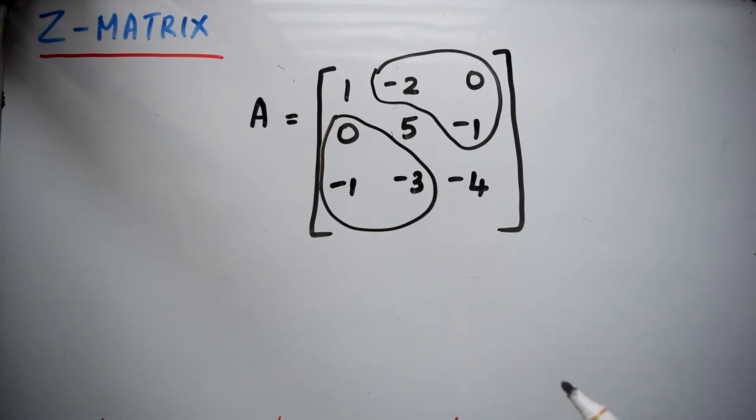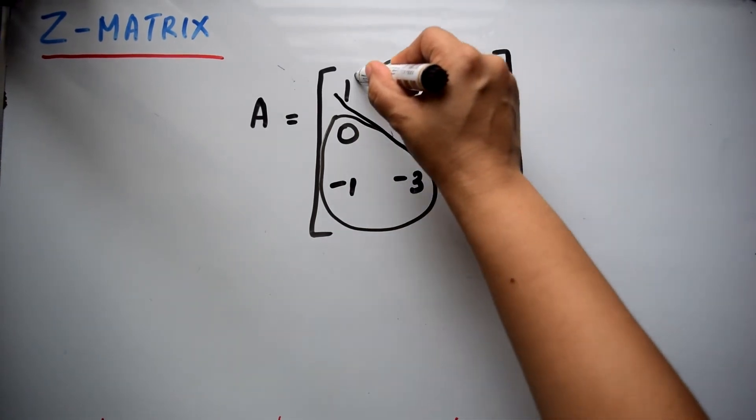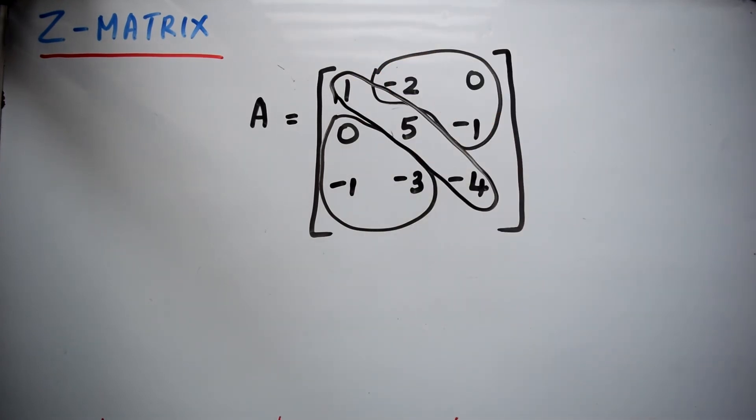No matter what the value of diagonal elements are, diagonal elements can be positive or negative values. But whatever be the value of the diagonal elements, the off-diagonal elements must be less than or equal to zero. Such a matrix is called a Z matrix.